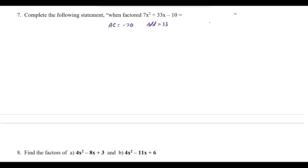Since AC is negative 70, I know the factors have opposite signs. Right away I know 35 times negative 2 will give me negative 70, and 35 plus negative 2 gives me 33. So those are the factors I'm going to use — I'll make this 35x and negative 2x to split the middle term.